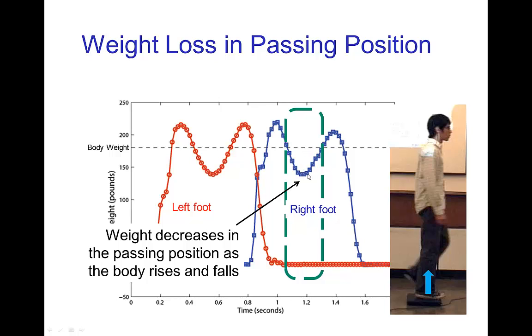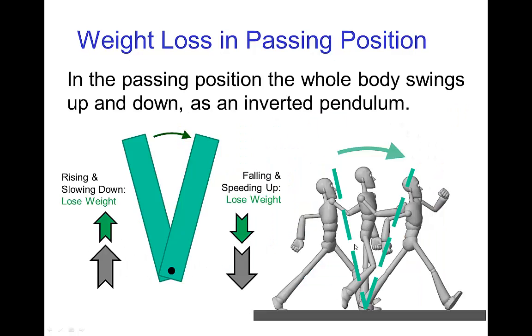This weight loss occurs because as you're walking and going through the passing position, the body is rising and slowing down and then falling and speeding up. This swinging motion actually produces a weight loss which we saw in that dip in the force plate measurement of weight.